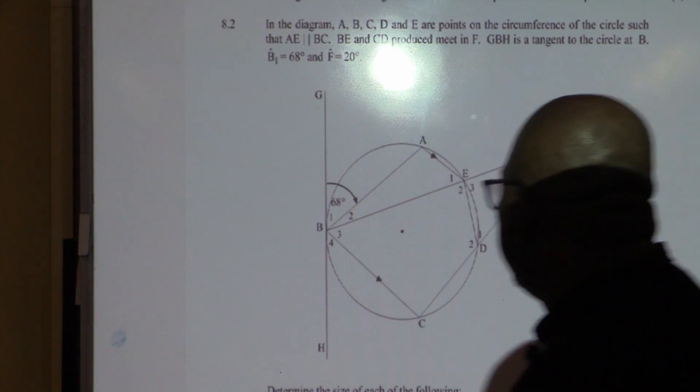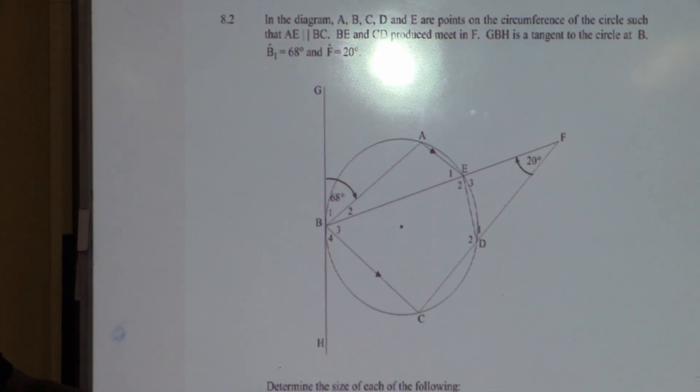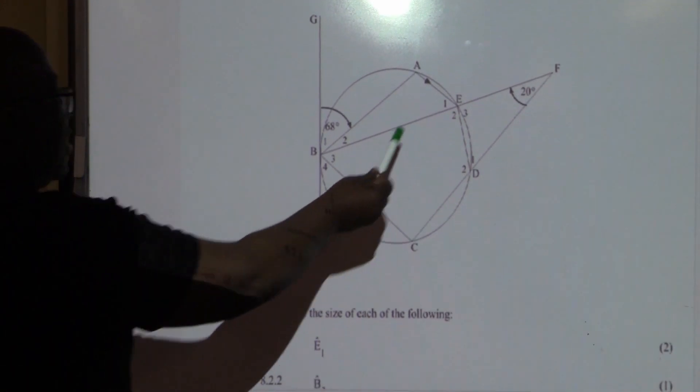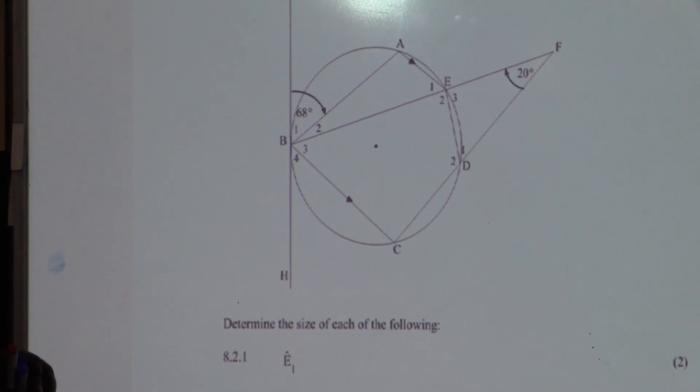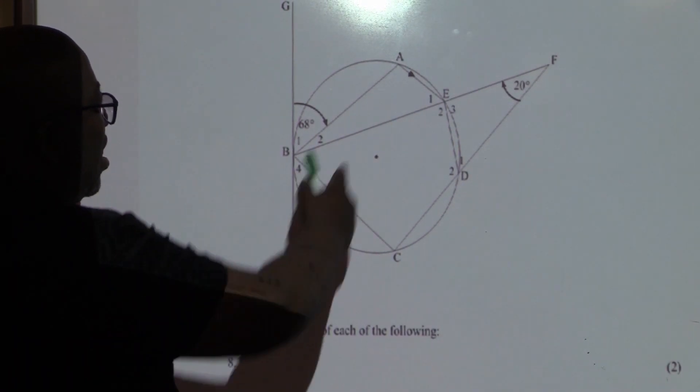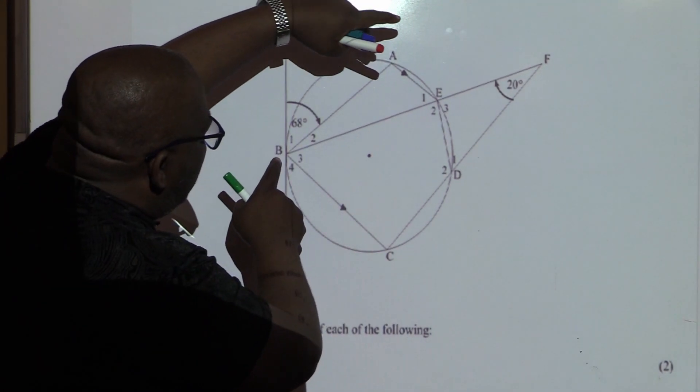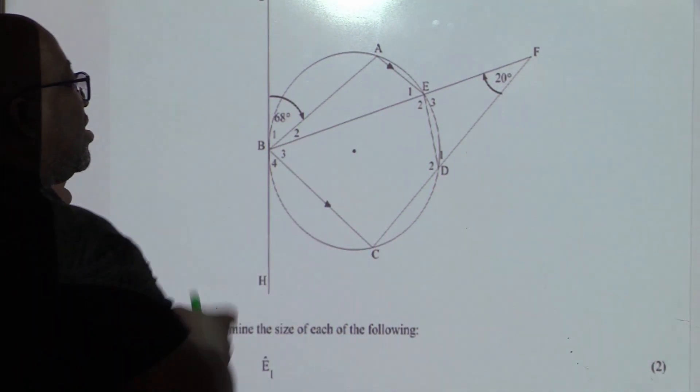Let's quickly work it out. Question number one. For two marks, find the value of E1. Where is E1? This is where E1 is. What will be the size of E1? I've got this one at 68. This is a tangent and this is a chord. If I go with the chord to the circumference, I will land at E1.